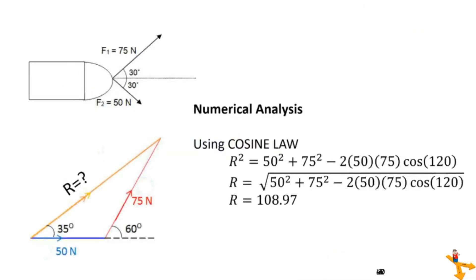The formulas for the law of cosines are shown in the picture. Now, using the cosine law, we can compute for the resultant R. R squared equals the square of adjacent side plus the opposite side minus the product of twice the two sides and cosine of the angle opposite the hypotenuse R, that we are looking for. Typing this on your calculators, we get 108.97.